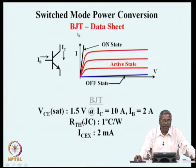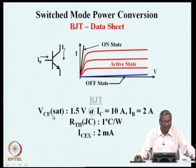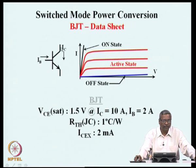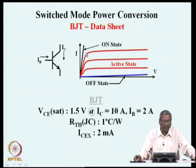The BJT datasheet is a storehouse of information. When the device is operating in the on-state, it has a collector-to-emitter voltage specified as V_CE(sat). With full base current in saturation, the collector-emitter voltage drop is very small while supporting large collector current. For this particular device, V_CE(sat) is 1.5 volts at a collector current of 10 amperes. To keep 10 amperes on at saturation level, the base current required is 2 amperes.